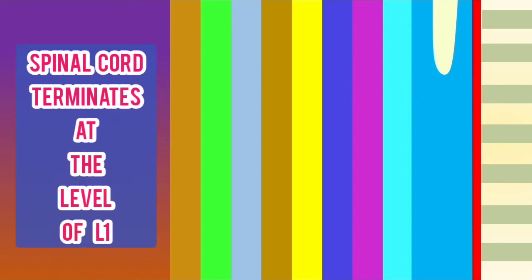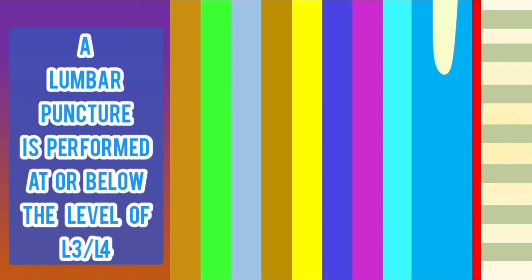A lumbar puncture must penetrate different layers before it reaches the area of the cerebrospinal fluid. Here we have the distal end of the spinal cord, and remember that the spinal cord terminates at the level of L1. In order to reduce the risk of damaging the spinal cord, a lumbar puncture is performed at or below the level of L3 to L4.